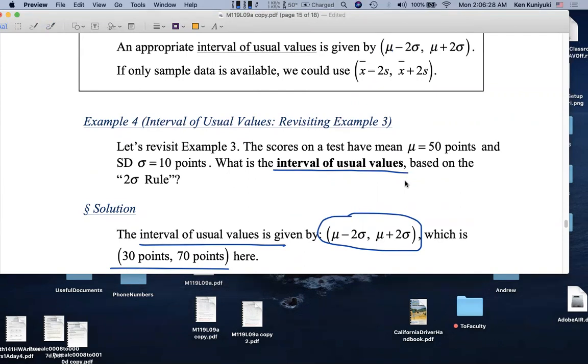But what if you scored 71 points, or 75 points, or certainly 99 or 100 points? Then you'd be doing unusually well. But if you scored 29 points, or 20 points, or certainly 0 points, you're doing unusually badly.